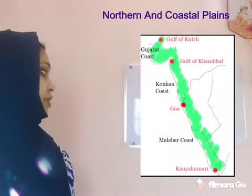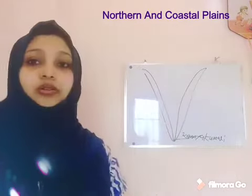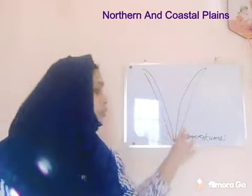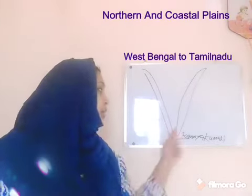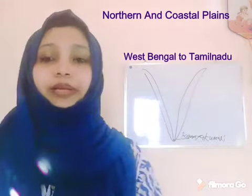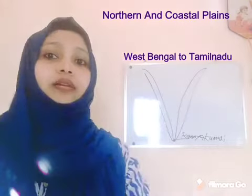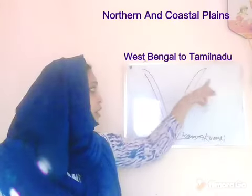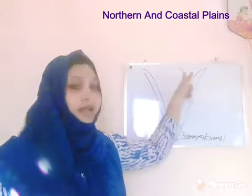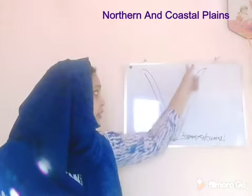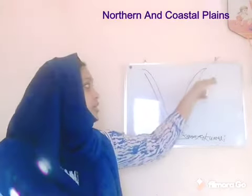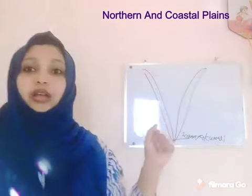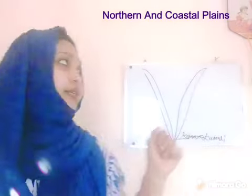The eastern coastal plain stretches from West Bengal to Tamil Nadu. It is wider than the western coastal plain. The eastern coastal plain lies between the Bay of Bengal and the Eastern Ghats.